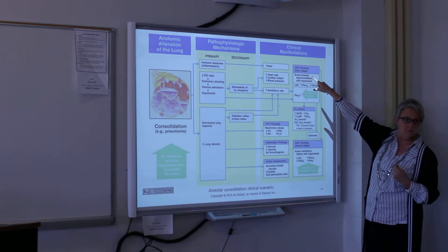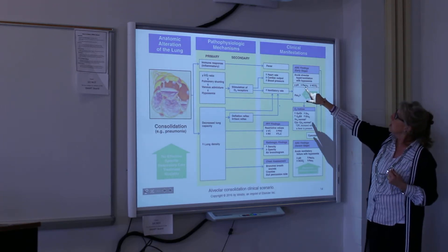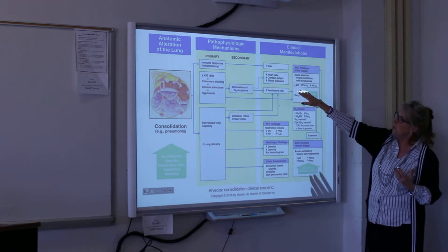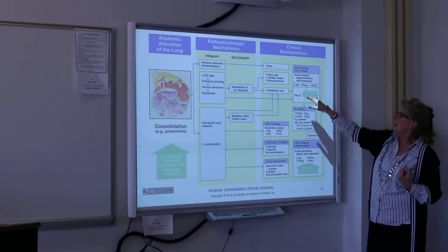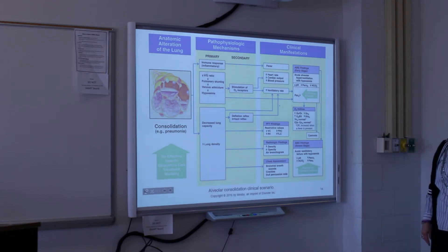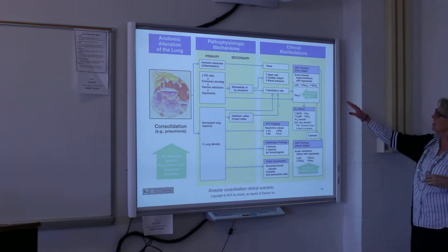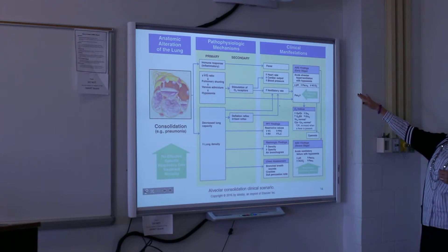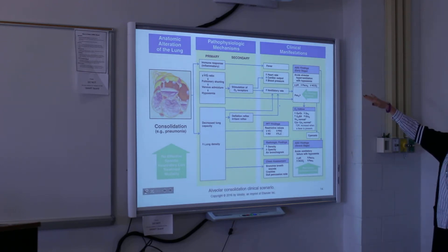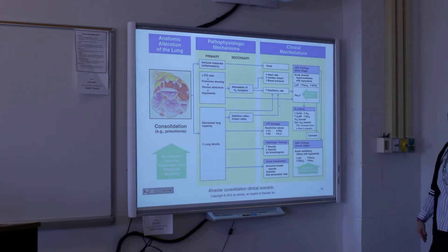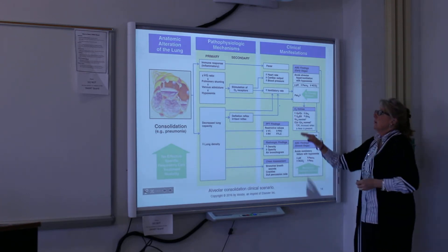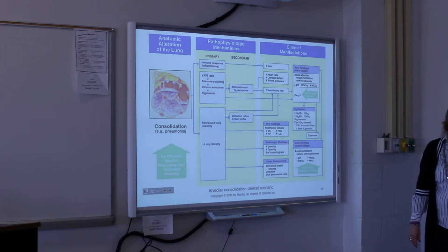The immune response is going to lead to a fever. The VQ imbalance, shunting, hypoxemia, and venous admixture lead to sympathomimetic stimulation. We're going to have increased heart rate, increased cardiac output, and increased blood pressure. The ventilatory rate is also going to go up.